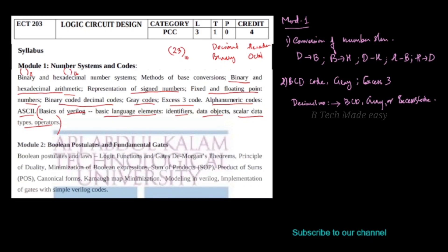You have to find the XS3 codes for a given number. These are described in this section. Module 1 covers conversions of number systems, BCD codes, Grey codes, and XS3 codes. That concludes Module 1.